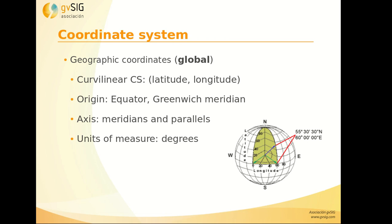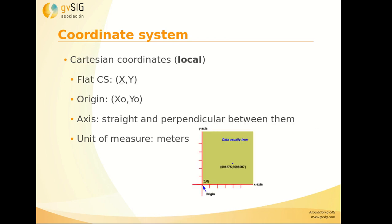The global one, the geographic coordinate system, manages latitude and longitude coordinates. The origin is the equator and the Greenwich meridian. The units of measure are degrees. The other one, the Cartesian coordinate system, is local — we manage the coordinates X and Y, and the measurements are made in meters.